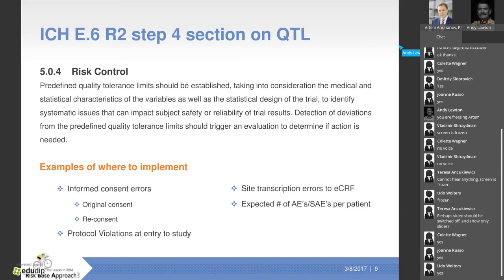This gives you a chance to tell regulators what the issues are and whether they impact the result. Some areas where we should consider implementing QTLs: informed consent errors — original consent should be treated differently from re-consent; protocol violations at entry to the study; eligibility violations; site transcription errors; and perhaps the expected number of adverse events per patient per unit of time.